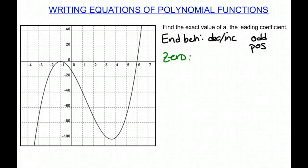And we see that there's 1 at negative 1, and there's 1 at 6. Now negative 1 has a multiplicity of 2, and 6 has a multiplicity of 1, because it goes straight through at that point, and at negative 1 it bounces. So we can write our equation from that information.